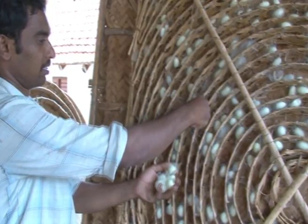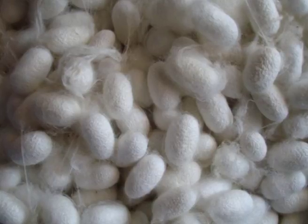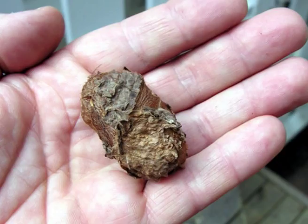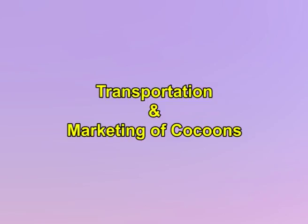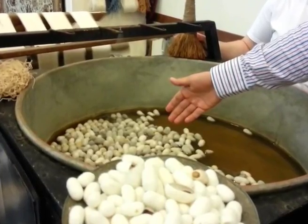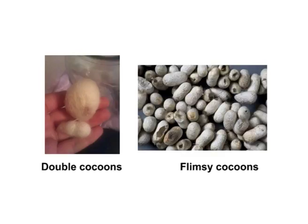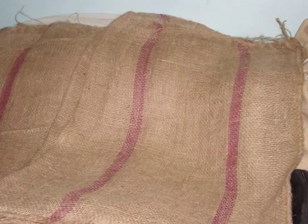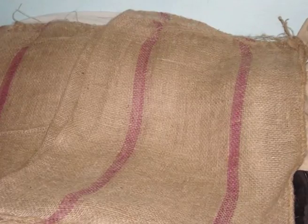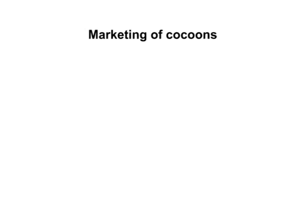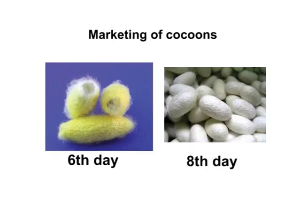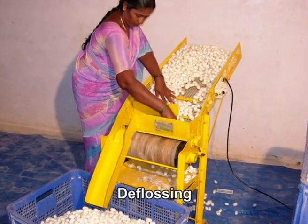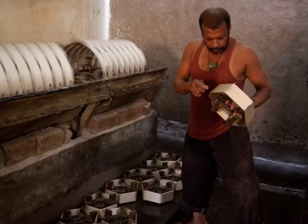Cocoons are normally harvested by hands. Harvested cocoons are cleaned by removing any fecal pellets on them and sorted according to sizes. Defective cocoons are separated. After harvesting, the cocoons should be cleaned by removing litter. Double cocoons and flimsy cocoons are separated out, and the cocoons transported in loosely filled gunny or cotton cloth bags during cooler hours of the day for marketing. Marketing of cocoons should be done on the sixth day for multivoltine and on the eighth day for uni- or bivoltine hybrids. If deflossing of cocoons is done, reelers would pay a reasonably higher price for such a lot of cocoons.